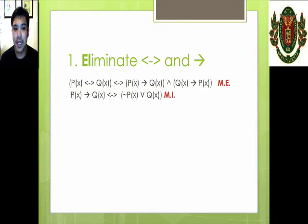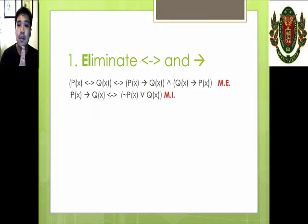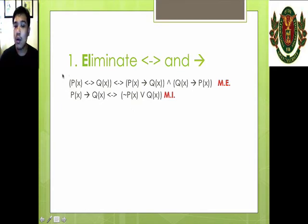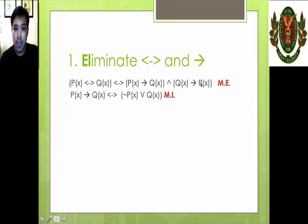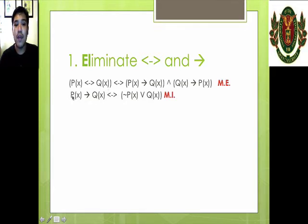So first, EL eliminates. Eliminate the material equivalence and material implication symbols, using these two laws. For example — just assume there are quantifiers outside, I removed them for simplicity — P of X if and only if Q of X is equivalent to P of X implies Q of X and Q of X implies P of X. That's material equivalence. And P of X implies Q of X is equivalent to not P of X or Q of X using material implication. That's EL.